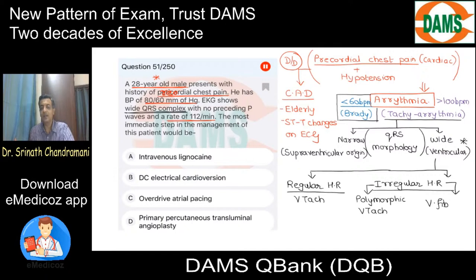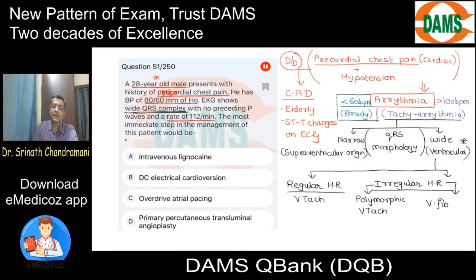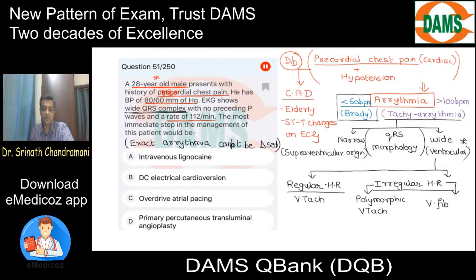In ventricular arrhythmias, it may be difficult to identify the P waves. So the exact arrhythmia cannot be diagnosed based on the information given.